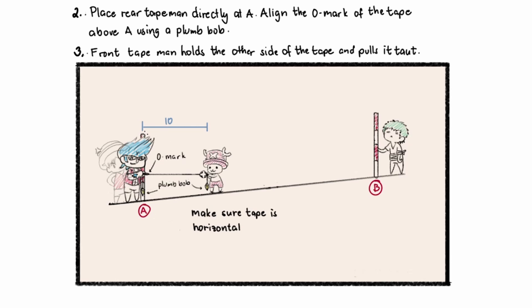For the rear tape man, they must ensure that the zero mark is directly above point A. And then for the front tape man, they must ensure the point below the plumb bob to be marked later on. So before we proceed, we must make sure that the tape is horizontal or else that will cause error in the calculation.